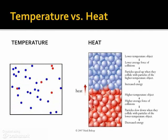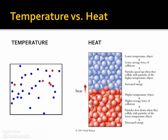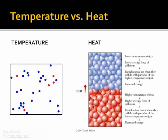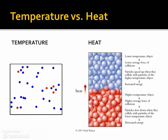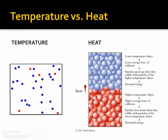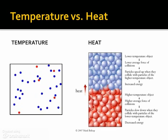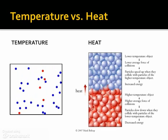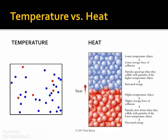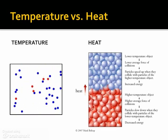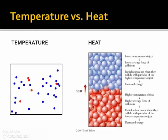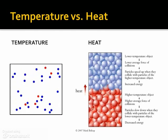Heat always flows from a higher temperature region to a lower temperature region. Often, heat is described as flowing from the system to the surroundings, or from the surroundings to the system.